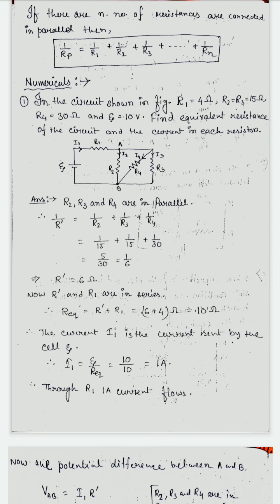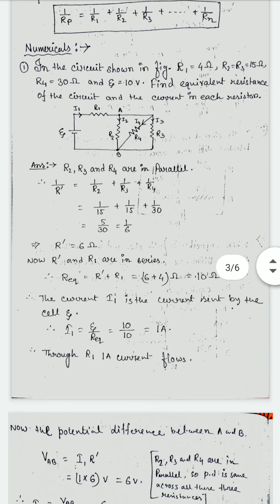So R2, R4 and R3 are in parallel combination. First we find out the equivalent resistance of these three resistors, denoted by R dash. After putting the values, we get R dash = 6 ohms. Now the 6 ohms (R dash) and R1 are in series — end to end connection — so simply R dash + R1 = 10 ohms. The equivalent resistance of the circuit is 10 ohms. The total current I1 = E / R_equivalent = 1 ampere. So this 1 ampere current flows through R1.